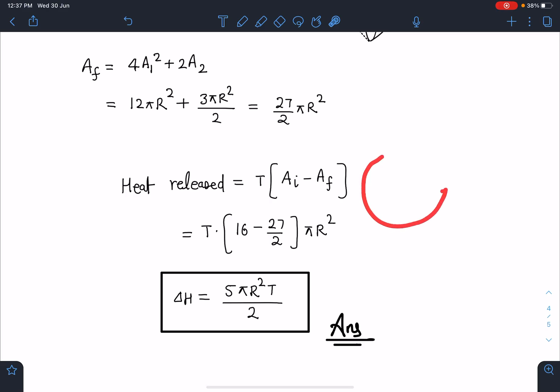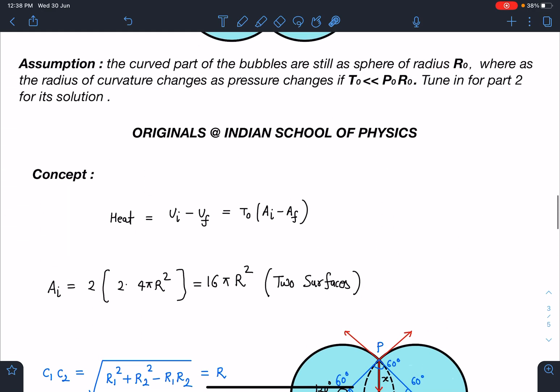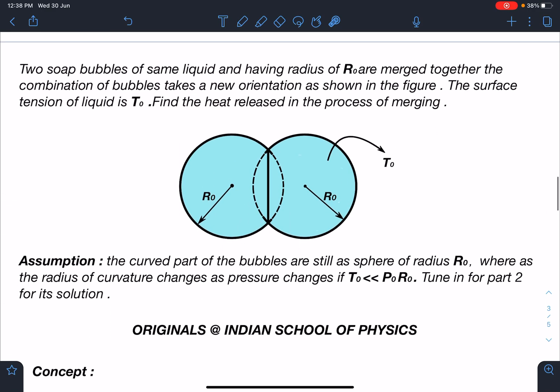So guys please remember this is under the assumption that shape of the bubbles are not changing, that is given in the problem statement. Shape is not changing or you can say that it remains the same sphere of radius R.